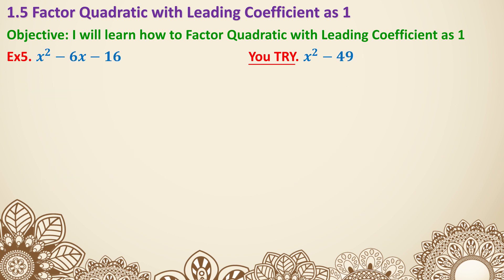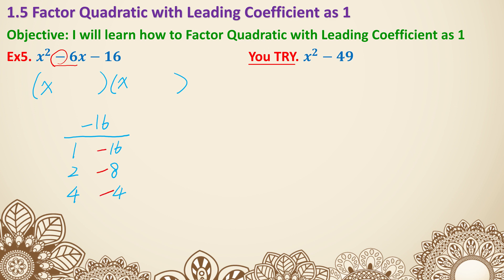Example 5 — try this one yourself first. Each parenthesis starts with x, and we need two numbers that multiply to get negative 16. Pairs: 1 and 16, 2 and 8, 4 and 4. Since it's negative 16, one number must be negative. The middle is negative 6, so we need to be more negative — bigger numbers get the negative sign. 1 plus negative 16 is negative 15 — no. 2 plus negative 8 is negative 6 — yes! 4 plus negative 4 is 0. So I need 2 and negative 8. Note: when two numbers are equal with opposite signs, they add to 0, giving a 0x middle term.